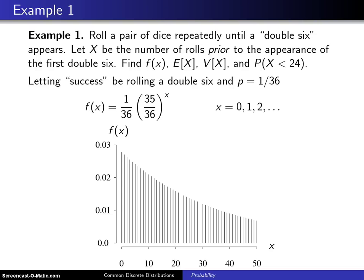Here's an example that illustrates the geometric distribution. Roll a pair of fair dice repeatedly until a double 6 appears. Let the random variable X be the number of rolls prior to the appearance of the first double 6.